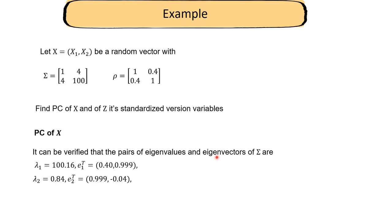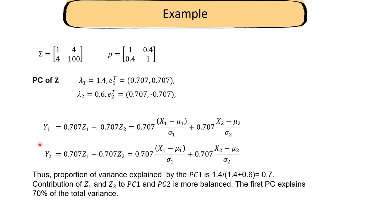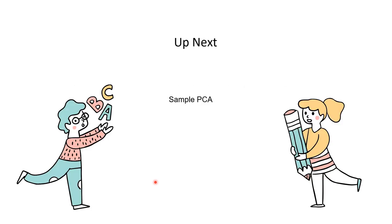Going back to our example: for the unstandardized case, the first principal component explains 99.2% of variance, so we just pick that one and drop the second. In the standardized version, the first PC accounts for 70% of variation — so it's less clear. If you think 70% is enough, keep just the first; otherwise include the second. This is a subjective choice. In the next video we'll talk about PCA when we have a sample.